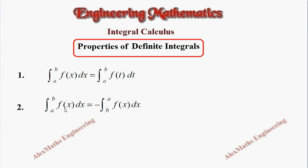Second property: when we have integral a to b of f(x) dx, and when we interchange the limits from b to a, it becomes negative. So integral a to b of f(x) dx equals minus integral b to a of f(x) dx.